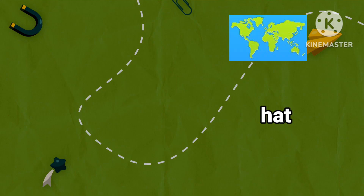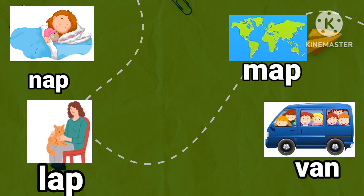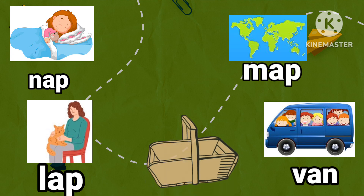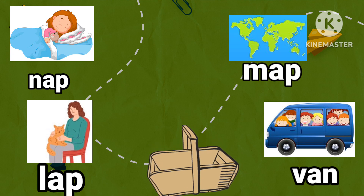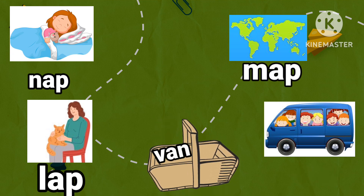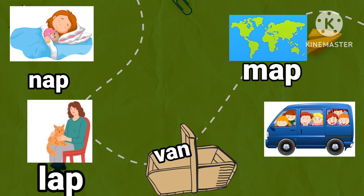Now, next. Children, let us say the words together: nap, lap, map, van. Nap, map, van, lap. Which word is not rhyming in the group? Van. Pick up the word van and drop it in the basket.